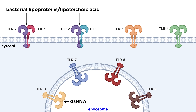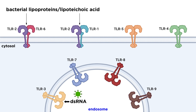Because TLR3 is located in the endosome and not the cytosol, it can't directly sense intracellular viral infection. However, it can sense extracellular viruses that have been endocytosed, or viruses that have infected a neighboring cell that gets phagocytosed. TLR4 is one of the most well-studied of the mammalian TLRs, and it senses lipopolysaccharide, or LPS, which is found in the outer cell membrane of gram-negative bacteria.